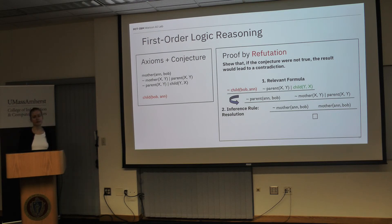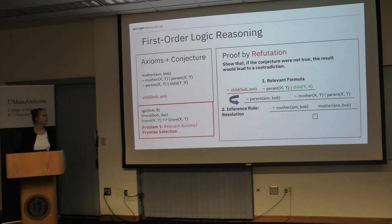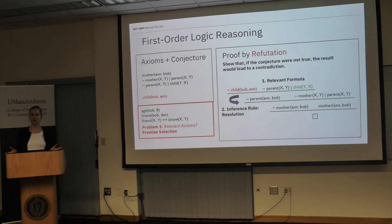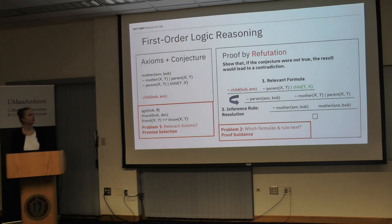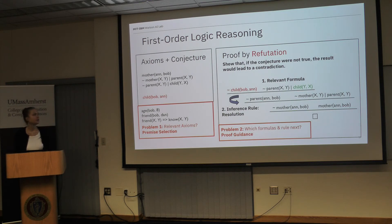In this setting, learning systems study two main problems. The first is the selection of relevant axioms before the proof starts: if you want to prove a mathematical theorem, you can in principle use all theorems proven so far — thousands or millions — so which ones do you need? The second problem is proof guidance: within the proof process, at each proof step you have to select the relevant formula and the inference rule to apply.